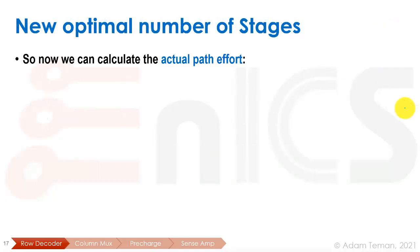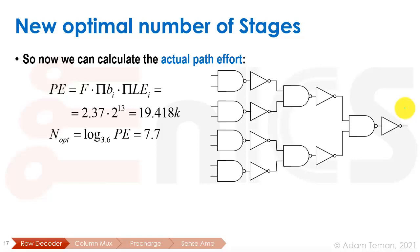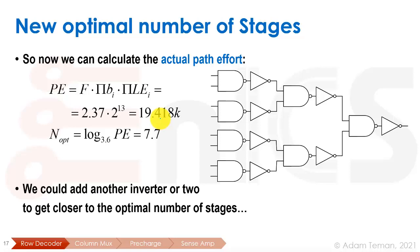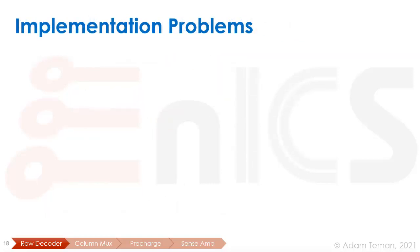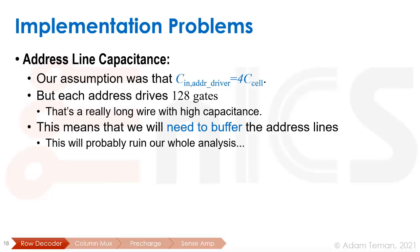Now we can calculate the path effort with the actual logical effort of 2.37 instead of assuming 1. This gives a path effort of about 19,000, and the optimal number of stages becomes 7.7 — so either 7 or 8. We currently have six stages; adding the address drivers is another stage, putting us near optimal. We could add another inverter or two to get closer. But there are implementation problems: each address driver must drive 128 gates, which is a huge fan-out, and we will likely need to buffer the address lines.